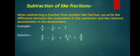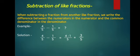Subtraction of like fractions: when subtracting a fraction from another like fraction, we write the difference between the numerators in the numerator and the common denominator in the denominator. See the example: 4 upon 5 minus 1 upon 5. We make the subtraction of both the fractions. So, write the common denominator, which is 5, and at the numerator 4 minus 1. So, 4 minus 1 is equal to 3 and denominator is 5, so answer is 3 upon 5.